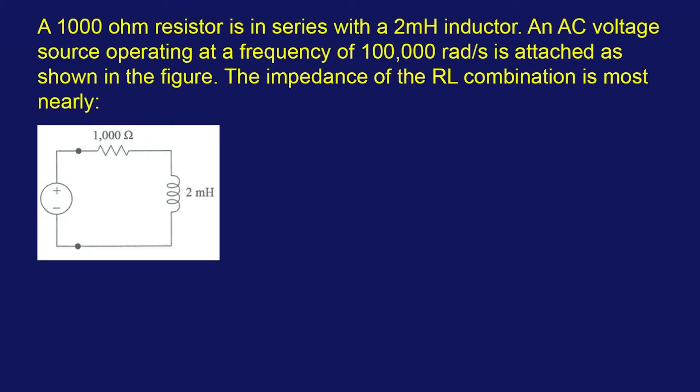We're dealing with AC circuits. We have a 1000 ohm resistor, a 2 millihenry inductor, and a frequency of 100,000 radians per second. Good thing they gave radians per second because that's really convenient. We're trying to find the impedance combination of this whole thing.